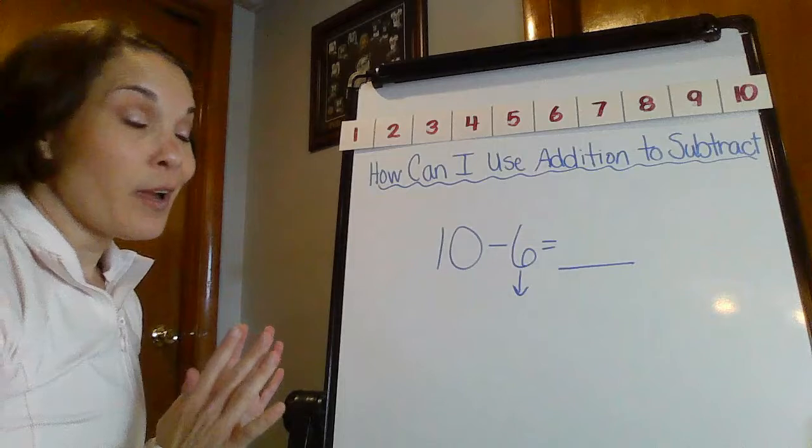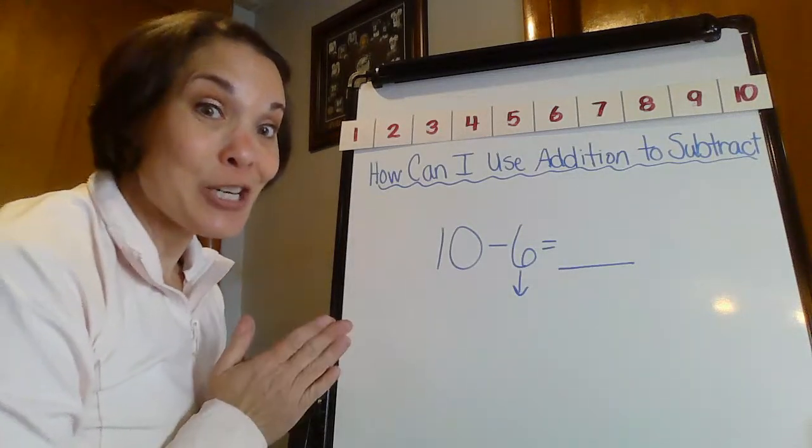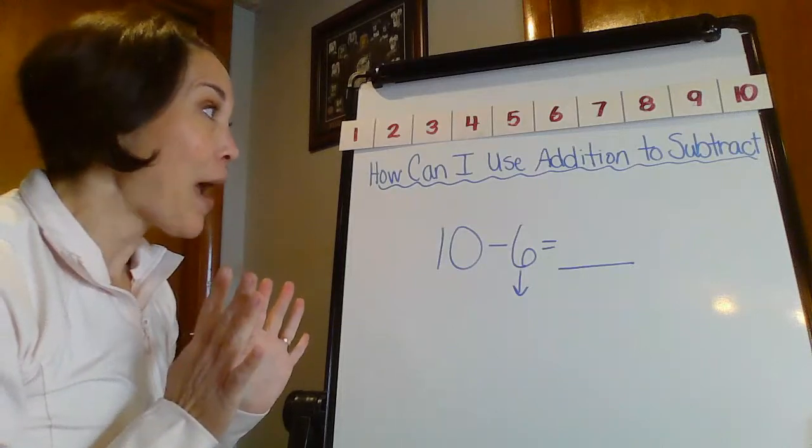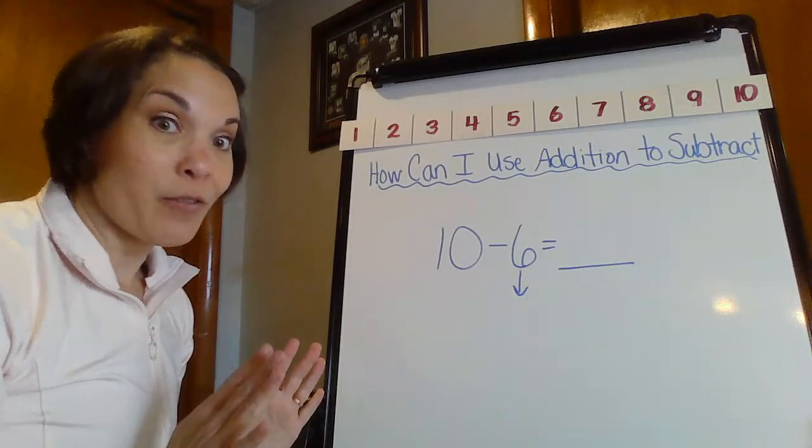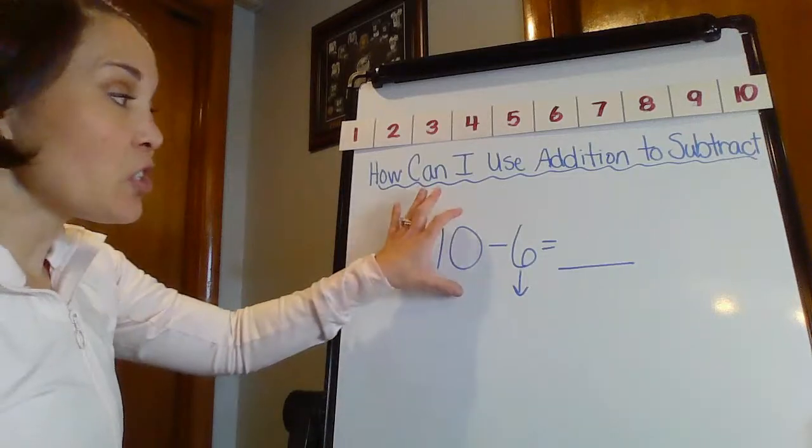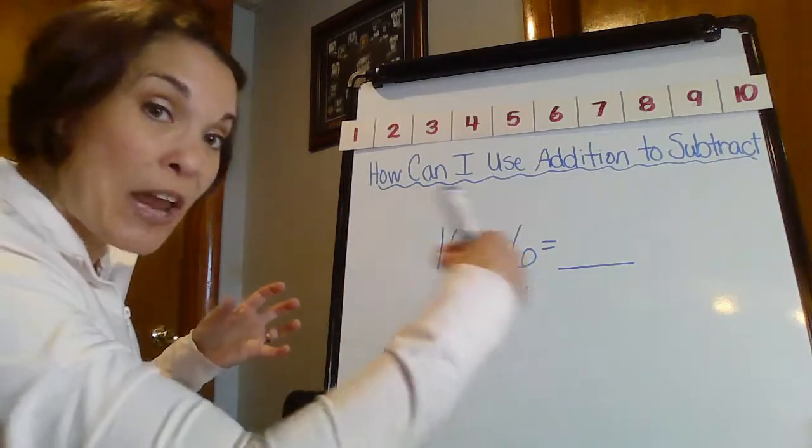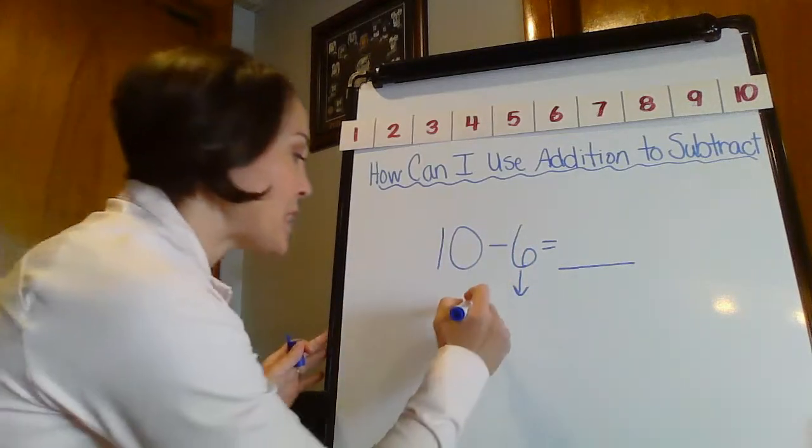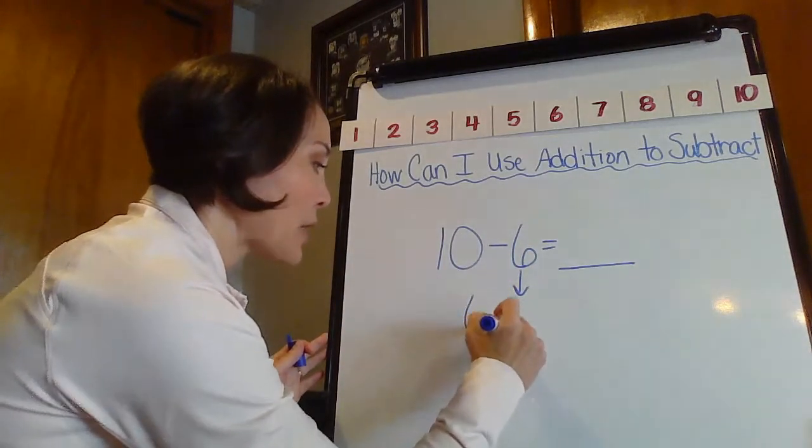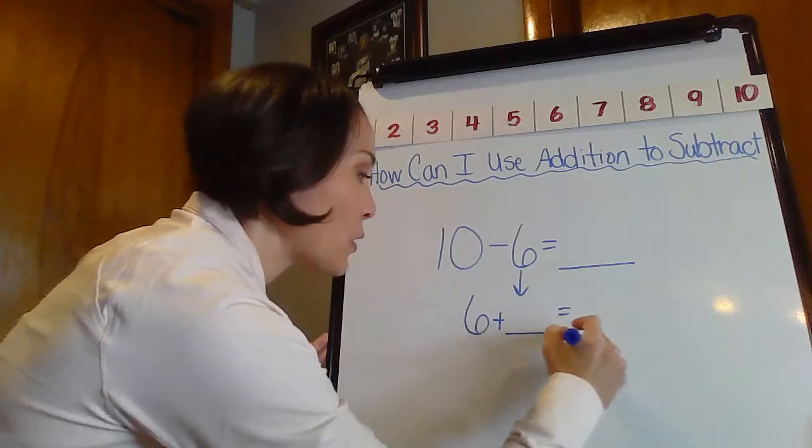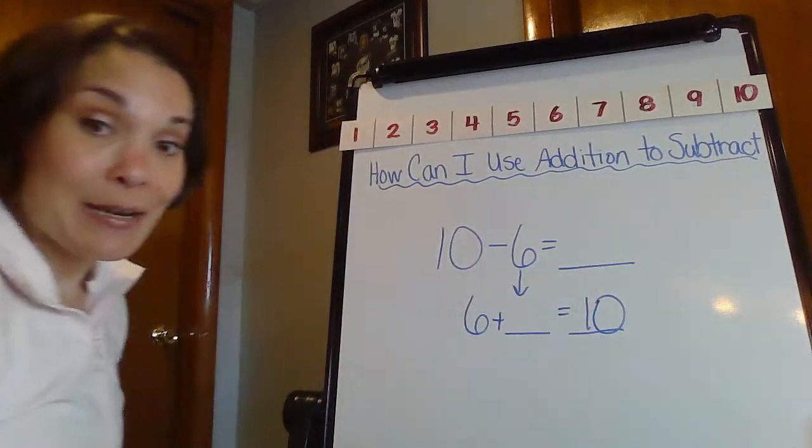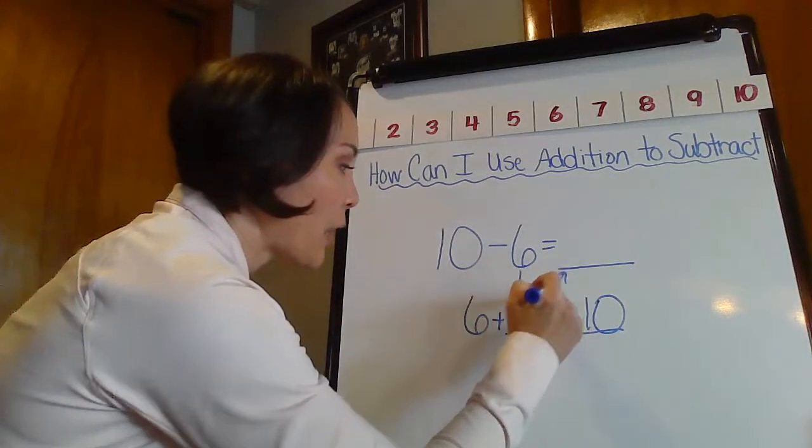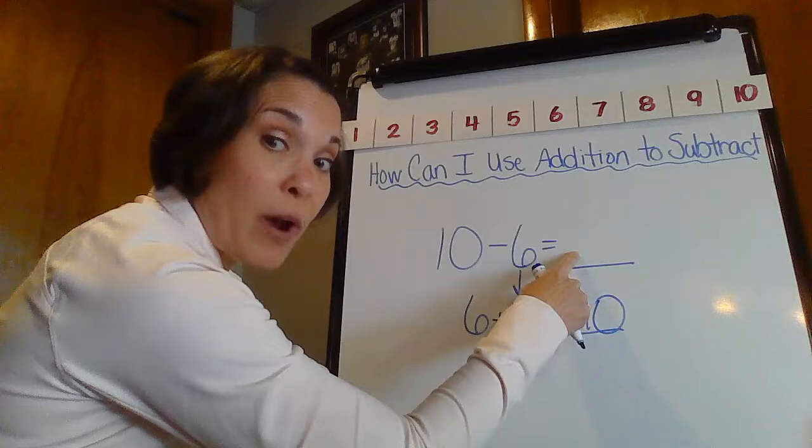So now let's figure out using an addition number sentence. So keep that 4 in the back of your mind there and hopefully we're going to figure it out. So remember, this is our whole. I'm taking away from that whole. I want to start with the part, so I want to start with 6 plus what equals 10.